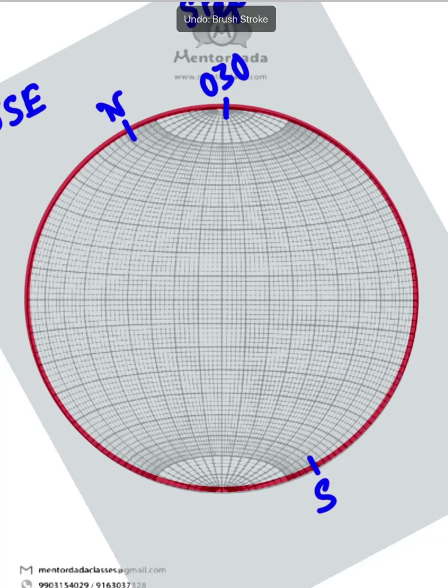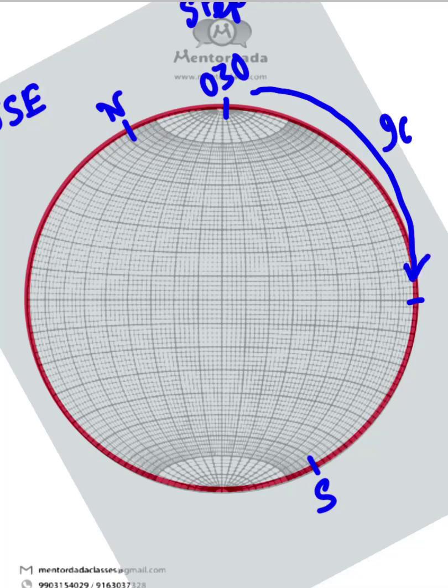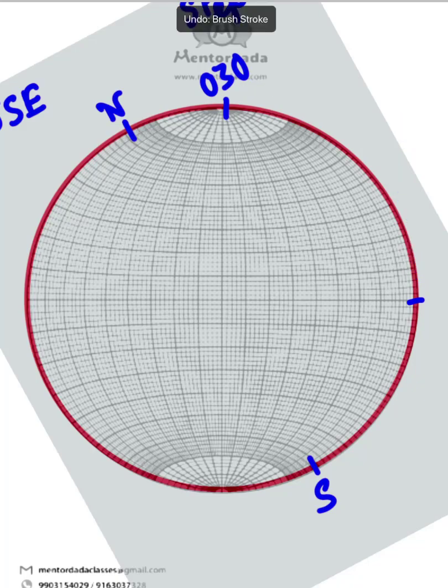So from this point, as we know that the dip direction is always 90 degrees away from the strike line, so our point will be this in the east-west line.